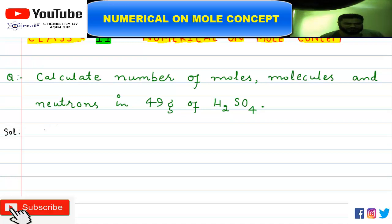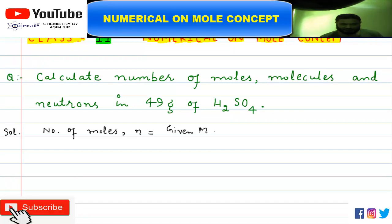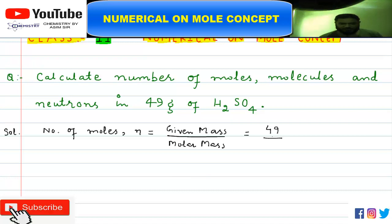If you talk about the number of moles, the formula we use is: number of moles (represented as small n) equals given mass divided by molecular mass. The given mass here is 49 grams of sulfuric acid. So I will write 49 divided by the molar mass of sulfuric acid.